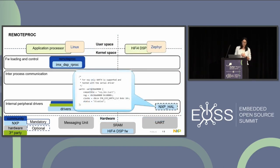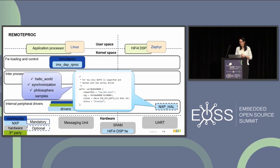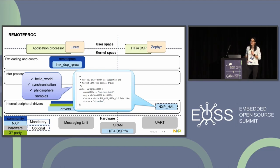In Zephyr, I've also enabled the UART — specifically UART4, added in the DTS, because this is the one used for the DSP. Based on the compatible defined there, we load the driver from the NXP HAL. With all of the above enabled, we can now run the Hello World, Synchronization, and Philosopher samples — just some configuration in the DTS.